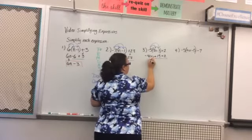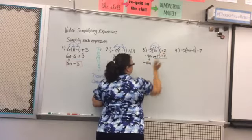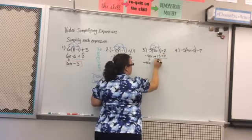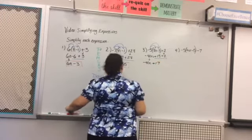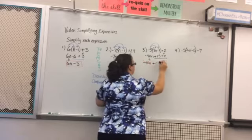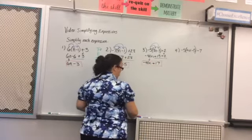I'm going to bring down this negative 40n in the same way that I just brought down this plus two. Positive 15 plus two is 17. Positive 17 so get a plus 17. I'm going to box that over. Negative 40n plus 17 is our final answer for that one.